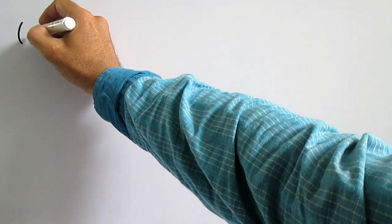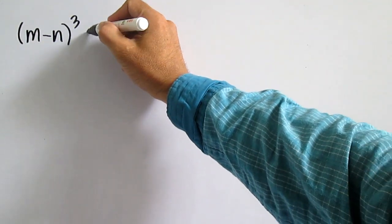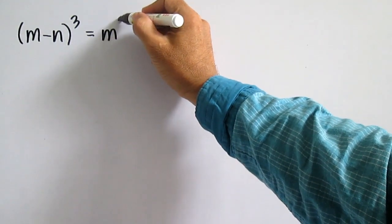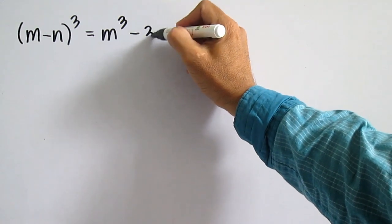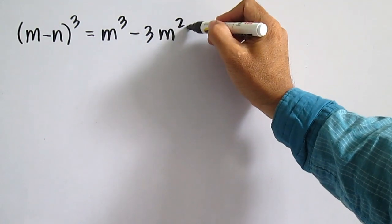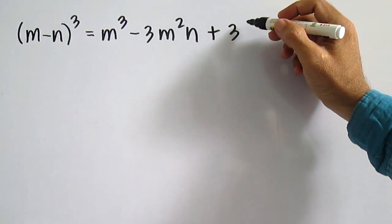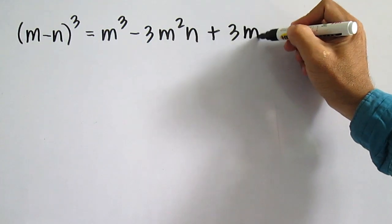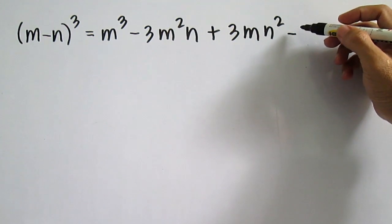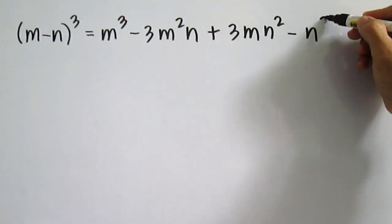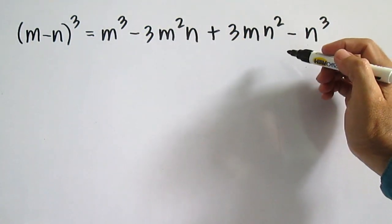Find the product. This time, a cube of the difference of two terms. This is equal to the cube of the first term, minus thrice the product of the square of the first term and the second term, plus thrice the product of the first term and the square of the second term, minus the cube of the second term. The signs alternate: plus, minus, plus, minus — take note.